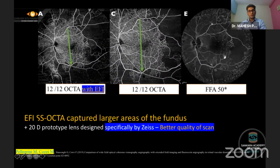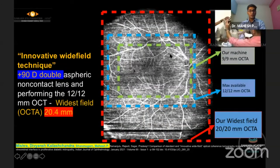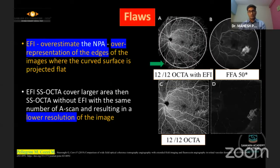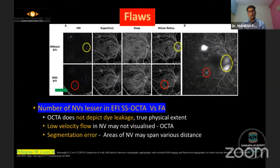Newer advances include a 20-diopter prototype lens designed by Zeiss — not yet on market — which gives better quality. In our published study, we achieved the widest field of view using a 90-diopter lens at 20mm. However, flaws exist: lower flow velocity overestimates CNP areas, EFI overestimates peripheral non-perfusion due to edge effect, lower resolution, and segmentation errors can occur. Neovascularization is underestimated as leakage and low-flow vessels are not detected.